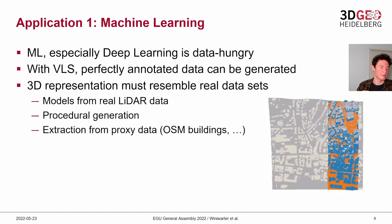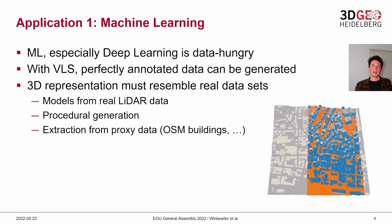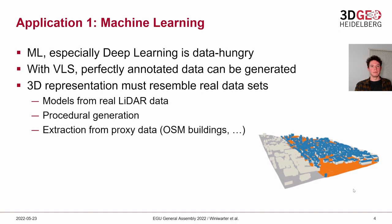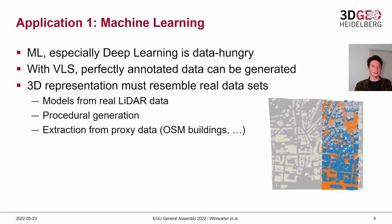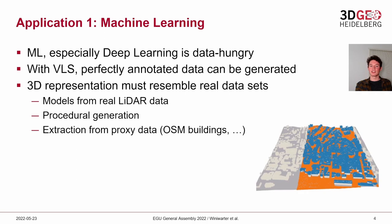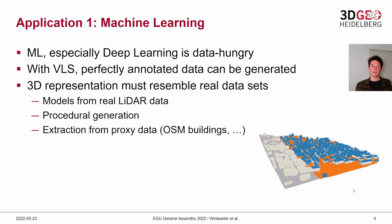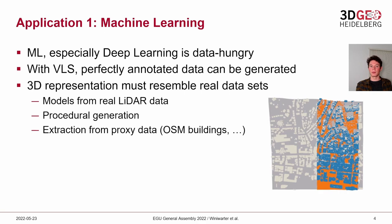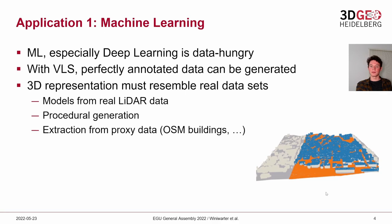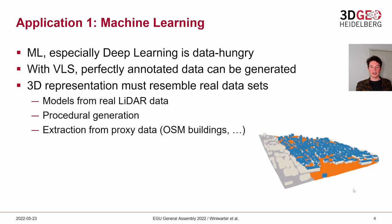For the first application — machine learning — methods of deep learning are very data hungry and need millions of labeled points for training. With virtual laser scanning you can generate such perfectly annotated training data very easily. You just need some model of your 3D world that resembles real datasets. Options include generating models from real LIDAR data, using procedural generation methods from the computer graphics community, or extraction from proxy data. Shown here is an excerpt from OpenStreetMap where we used building polygons, extruded them to a height, and ran a virtual laser scanning survey — ground points are colored in orange and building points in blue.